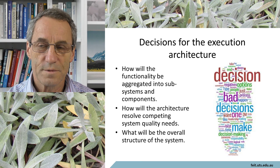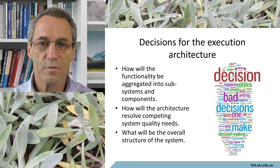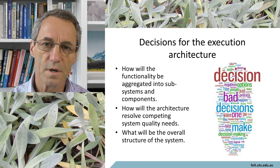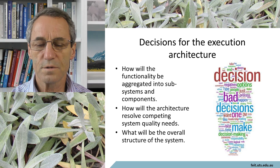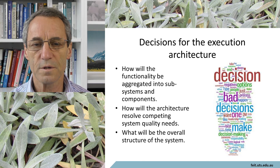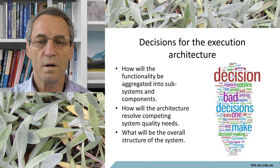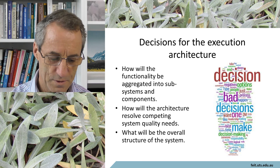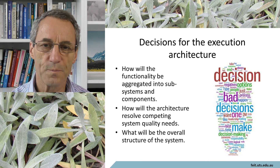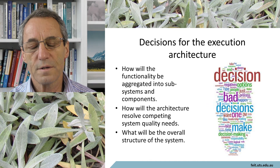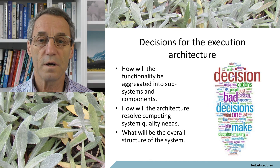When doing an execution architecture, there are about three major decisions to be made. The first is how you're going to aggregate functionality into subsystems and components. You have this previously loose collection of things that in the conceptual architecture didn't need to be connected together — now we have to connect them, partly to consider the communication between them all.